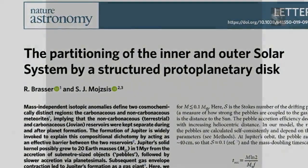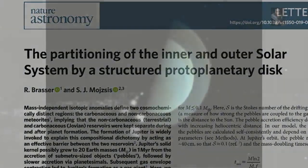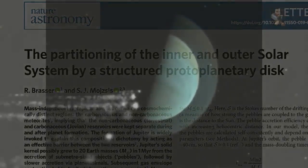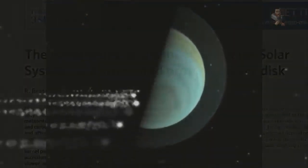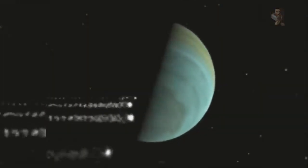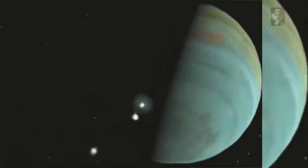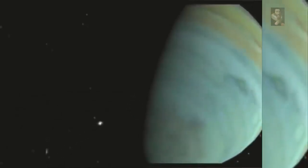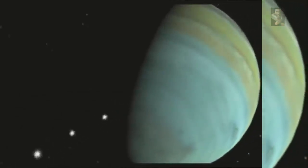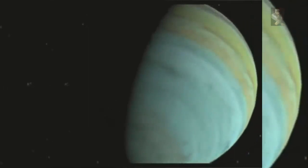Some astronomers believe that one reason Earth is habitable is that the gravity of Jupiter does help protect us from some comets, long period comets in particular, that enter the solar system from its outer reaches. Jupiter's gravity is thought to sling most of these fast-moving ice balls out of the solar system before they can get close to Earth.